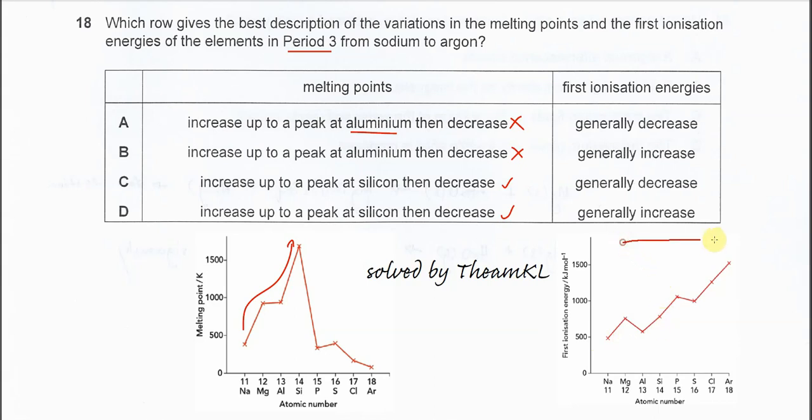Because across the period the shielding is almost constant, but the proton number or the nuclear charge increases.